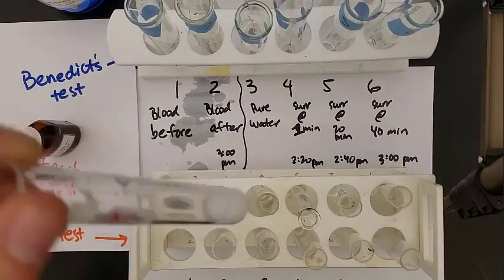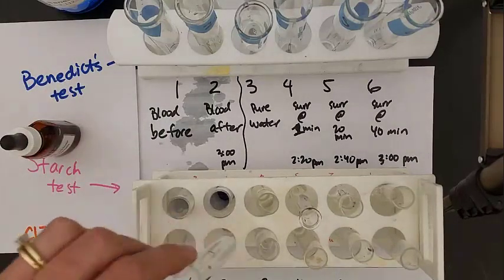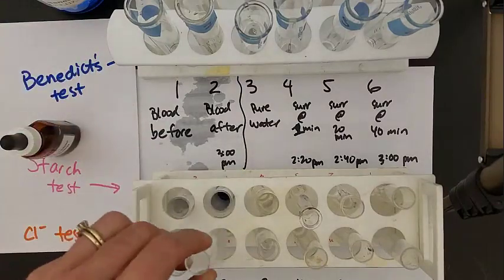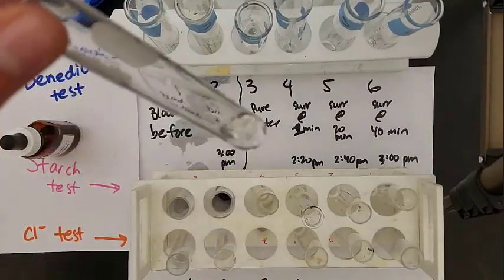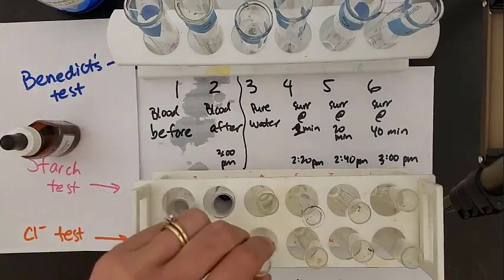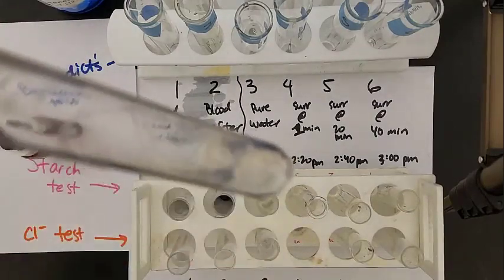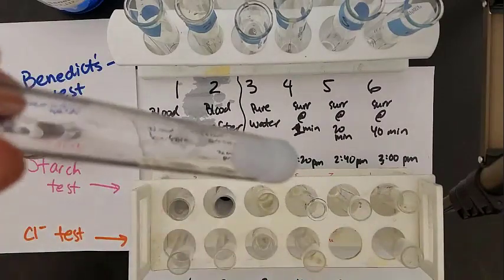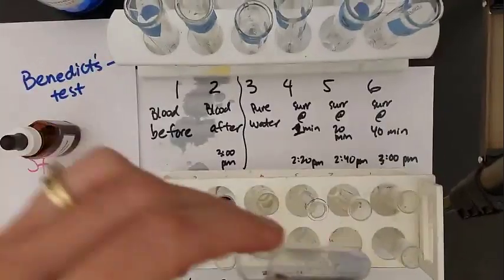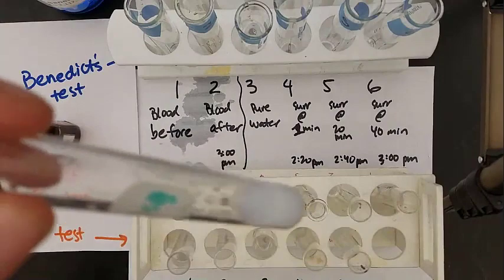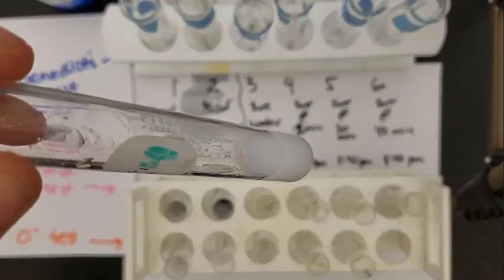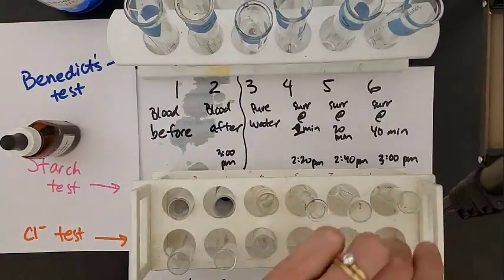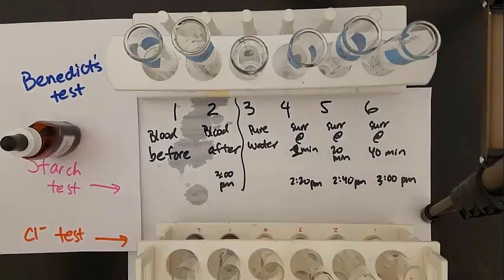We're looking for chloride here. It's white, so that's positive for chloride. Still white, so chloride is present in the blood afterwards. Transparent, colorless—no chloride in our water. Surroundings show no chloride initially. But after 20 minutes, it's white, showing some chloride was present, even whiter after 40 minutes. Those are the first two tests: starch and chloride.